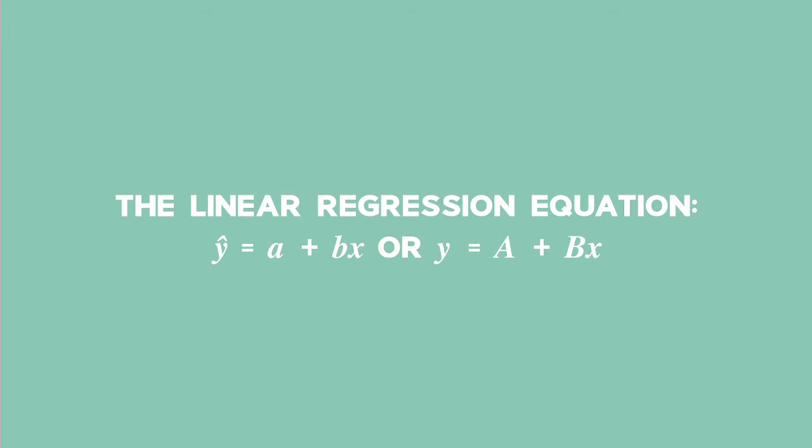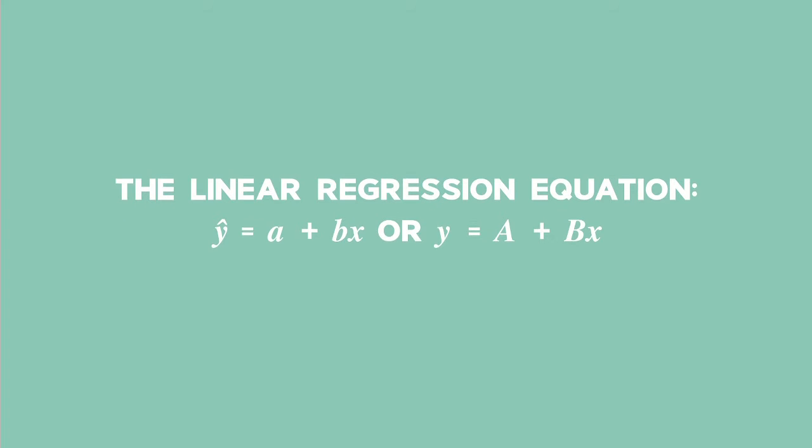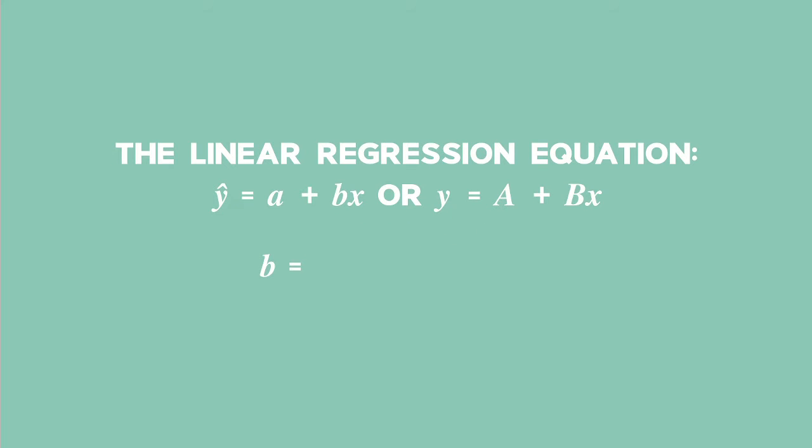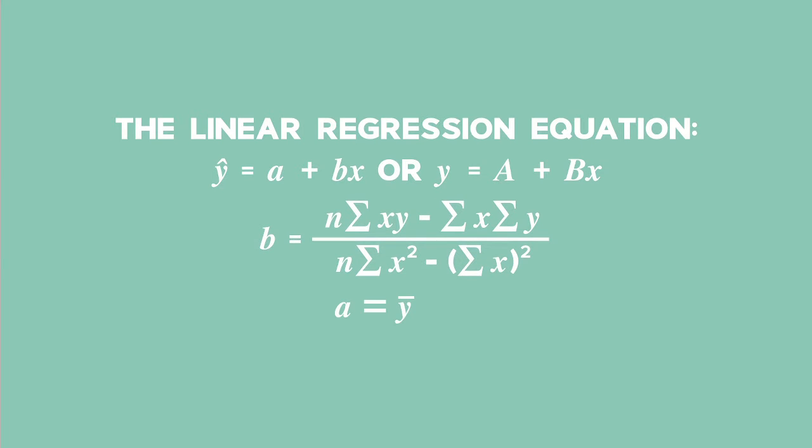Of course, these are both variations of the more familiar equation y equals mx plus c. The gradient of the line given by the letter b is given by n times the sum of the product of x and y minus the sum of x times the sum of y, all divided by n times the sum of the squares of the x values minus the sum of all the x values squared. The y-intercept of the line given by the letter a is equal to the mean of the y values minus b times the mean of the x values.